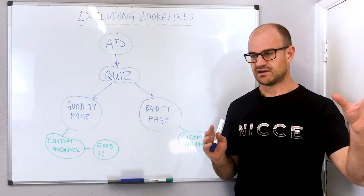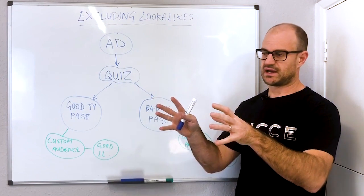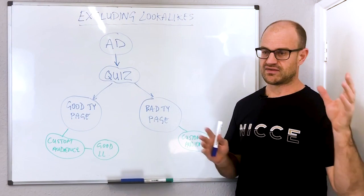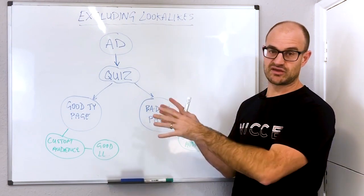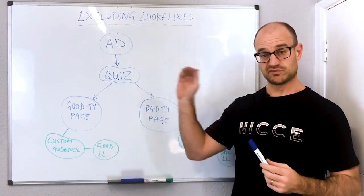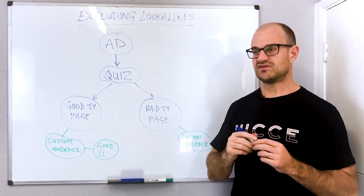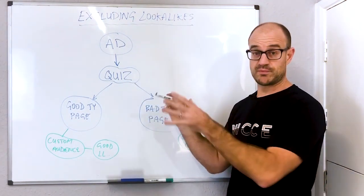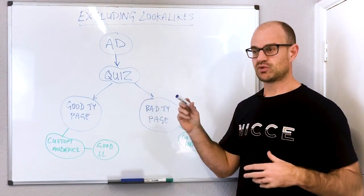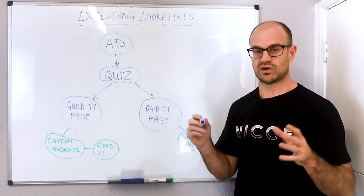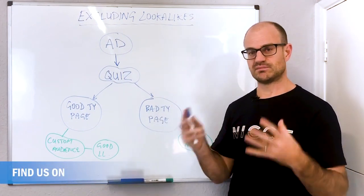You have an ad to a landing page and then a thank-you page. Someone clicks on an ad, fills out the landing page, and hits the thank-you page. If you have Facebook's pixel on that thank-you page and a certain number of people hit that page, Facebook will pixel those people and you'll be able to create a look-alike audience, which is a similar audience.